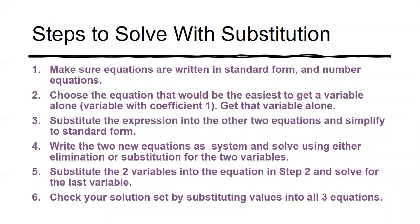Then you're going to substitute that expression into the other two equations and simplify. Our ultimate goal is always to get down to a two-variable system, because you can solve two-variable systems fairly easily using either elimination or substitution. You're going to substitute the two solved variables back into the equation from step two and solve for the last variable. Check your solution by substituting values back in.